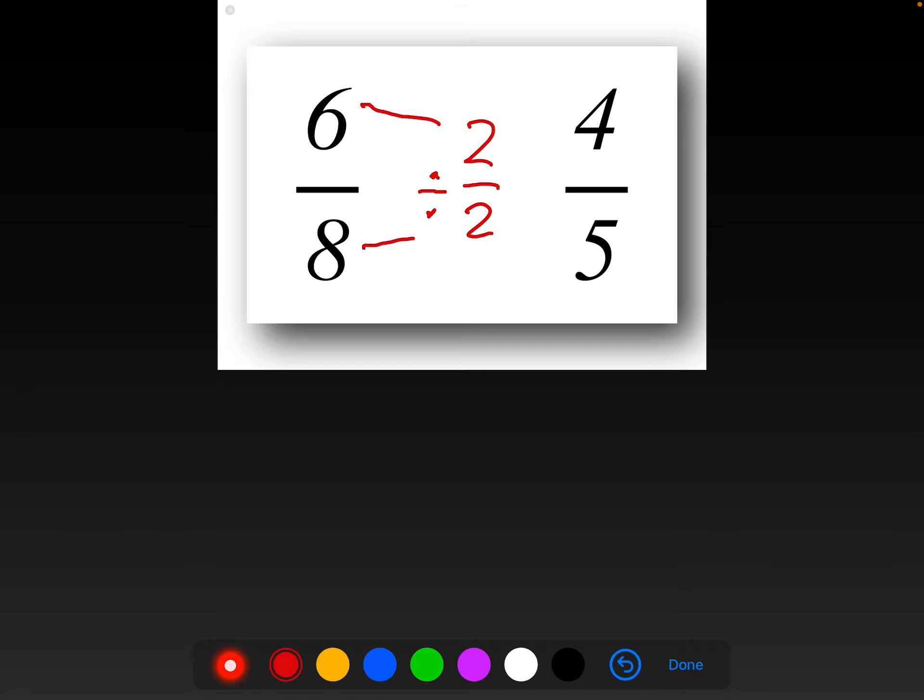So that would then change this to, excuse me, let me take that out, 3, because 6 divided by 2 is 3, and 8 divided by 2 is 4, and then we're comparing it to 4/5.